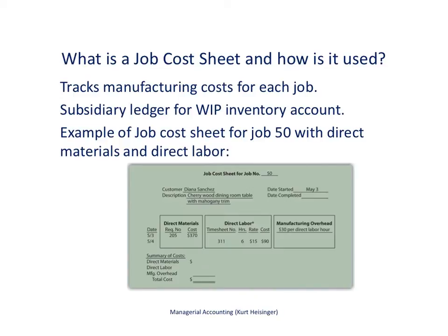Now that we know how to requisition direct materials and record direct labor hours, let's talk about how to track those costs for each job. We use a job cost sheet to track manufacturing costs for each job. The job cost sheet serves as the subsidiary ledger for the work in process inventory account. If we added up all the costs across multiple job cost sheets — for jobs still in process — the total should equal the balance in work in process inventory.